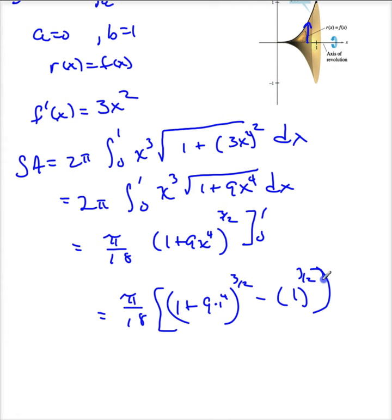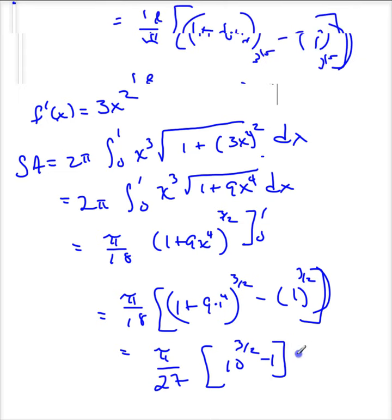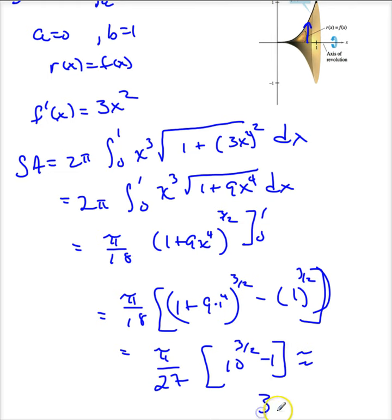And I get π over 27 times—this is not pretty, so just leave it—10^(3/2) minus 1. You can get a decimal approximation of 3.563 if you like.